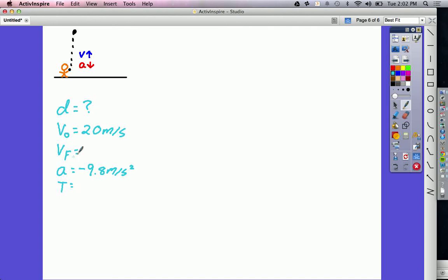That other number is final speed, final velocity. That's going to be zero meters per second. If you throw something up in the air at the highest point, it stops just for an instant before coming back down. So we're looking for an equation that does not have time in it. That's going to be our VF squared equals V0 squared plus 2AD equation.